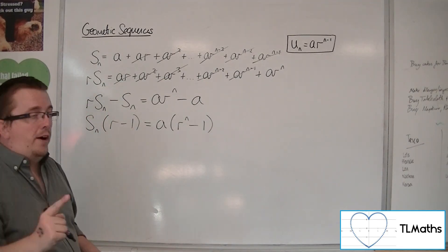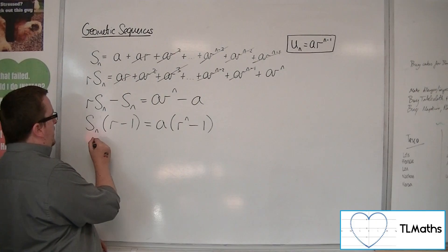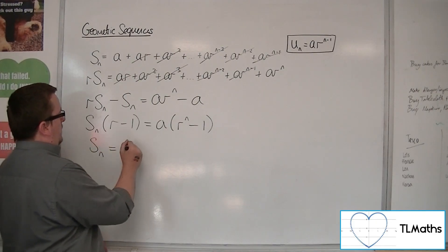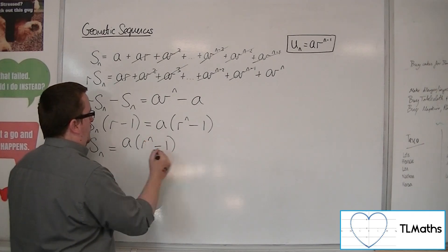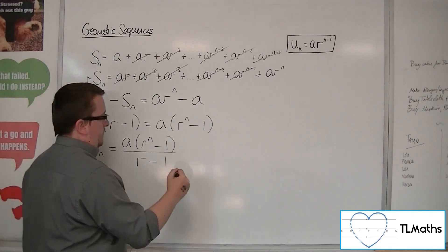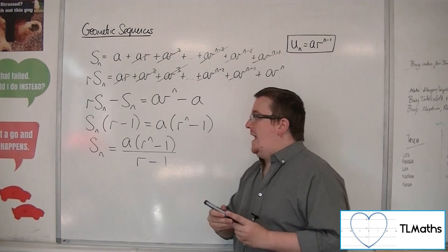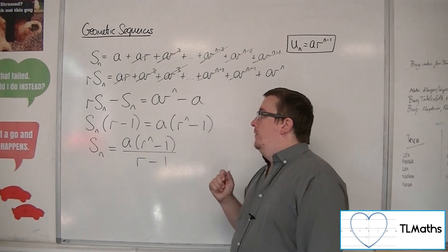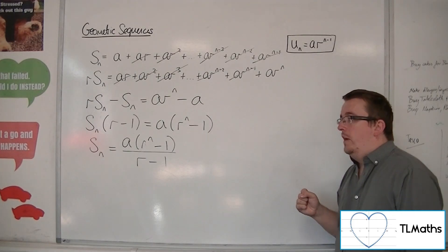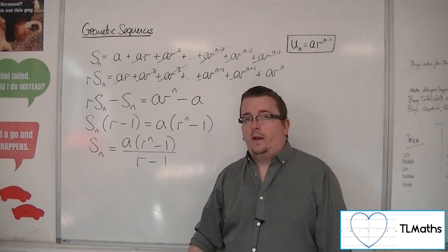Dividing both sides by r minus 1, I am left with this formula. So the sum to n terms is a times (r^n - 1) all over (r - 1).